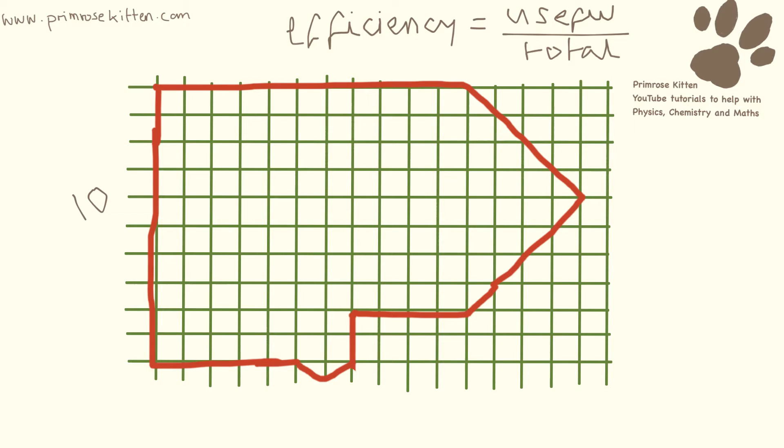And the useful energy out: 1, 2, 3, 4, 5, 6, 7, 8. Now the energy in always has to equal the energy out. So if I've got 8 useful energy, I must have 2 wasted energy, and it's 1, 2.